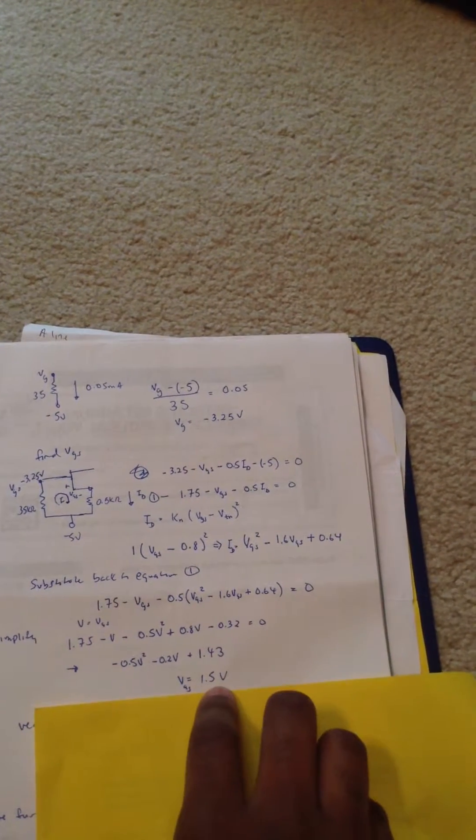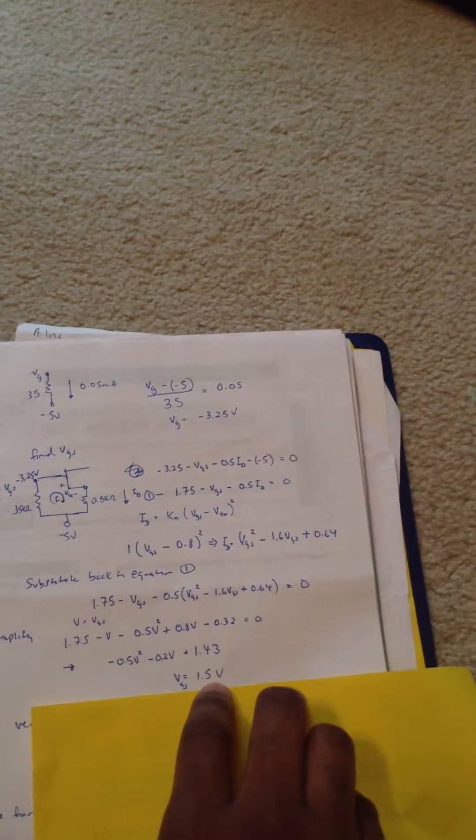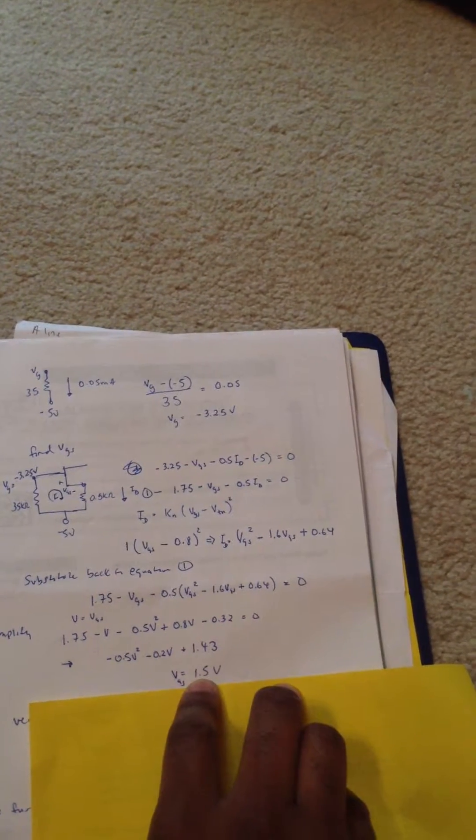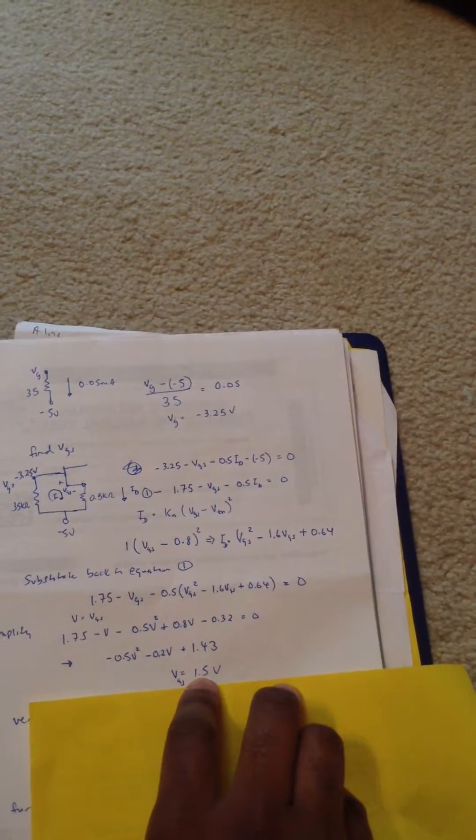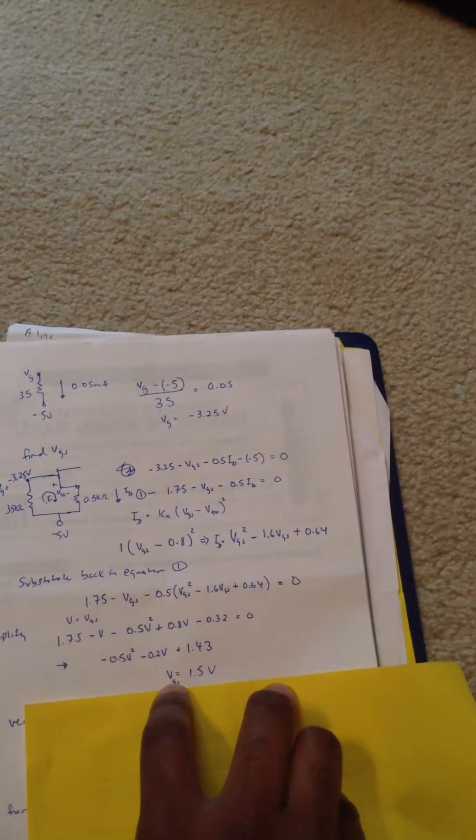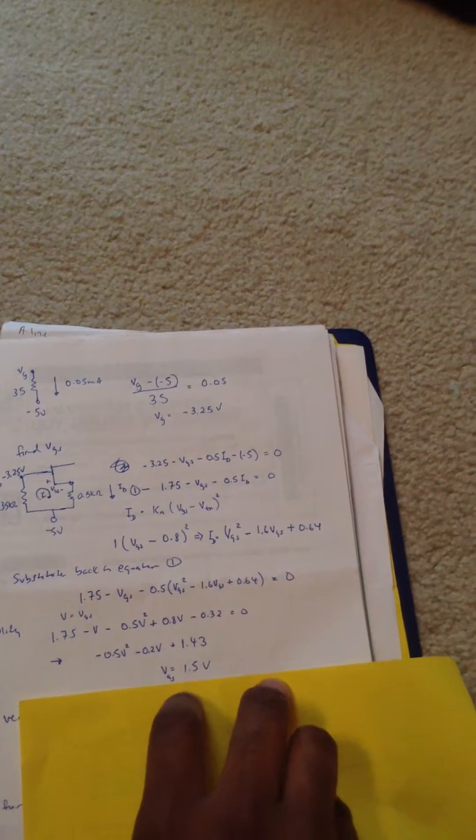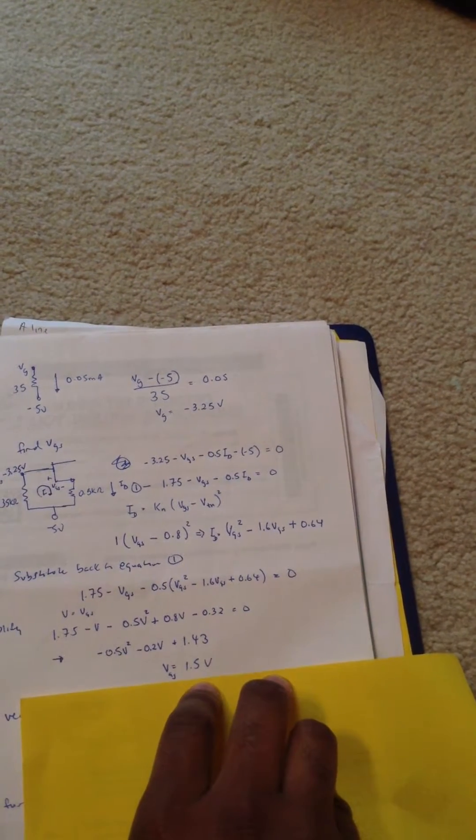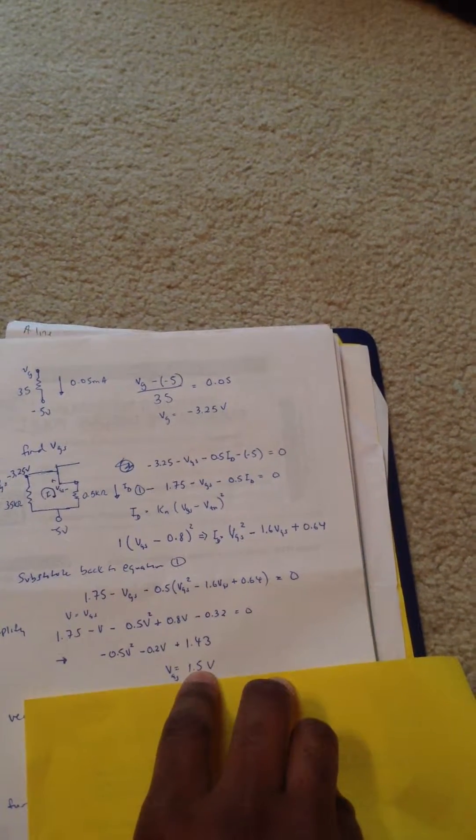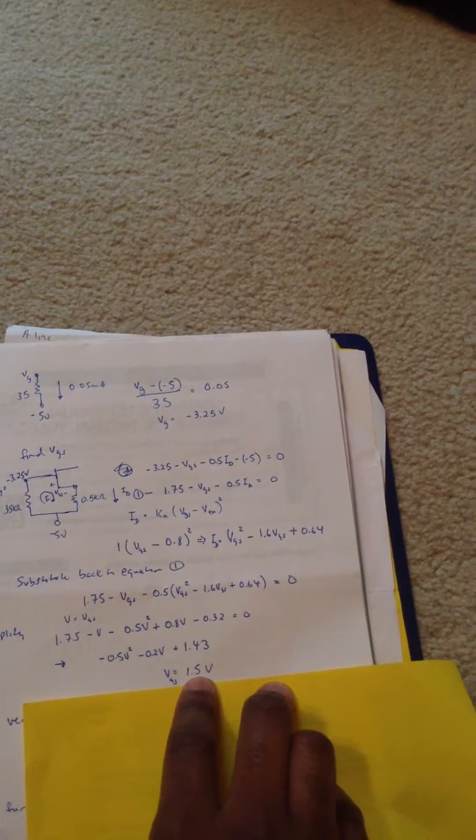VGS is given, it gives two values. We have a 1.5 and then we have a negative value. But since we're assuming that it's in saturation, the VGS is not going to be negative. So we can eliminate that negative solution. And we're just going to go with the 1.5. Now that we have VGS,